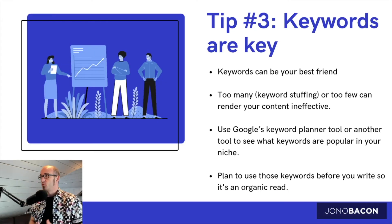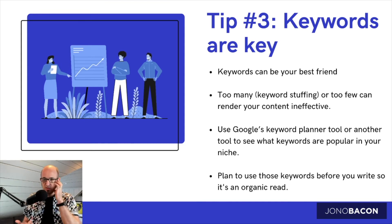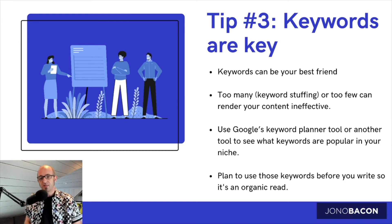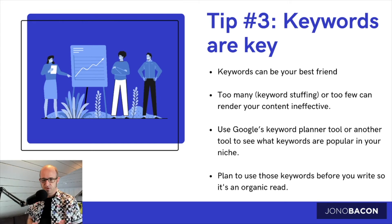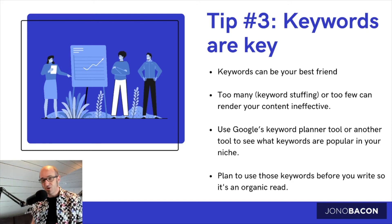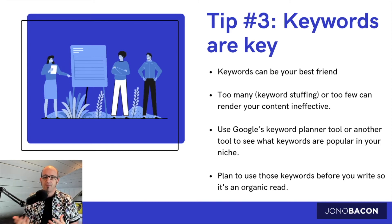Tip number three: keywords are really, really important. The way search engine optimization works is that it tends to be anchored to keywords. If someone is interested in Zoom, they'll type in 'zoom' and it will come up with articles and content that relates to that. So you want to choose your keywords based upon what people are likely to be searching for. If I'm focusing on an article about Zoom, I'll include the word 'zoom' in the headline, in the opening paragraph, and sprinkle it throughout the article a few times — that's going to optimize the post for SEO. If you pack it in too many times, that's called keyword stuffing and has the opposite effect. You can use tools like Google's Keyword Planner to determine which keywords tend to perform better than others. Make sure you think about which keywords you want to target before you create the content.